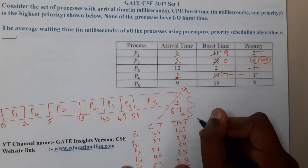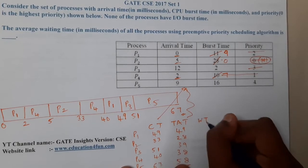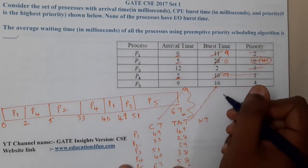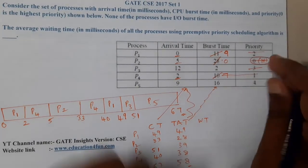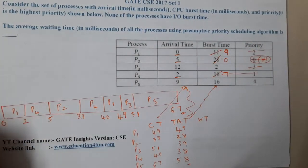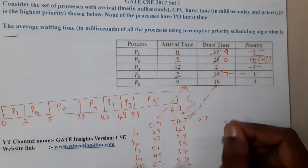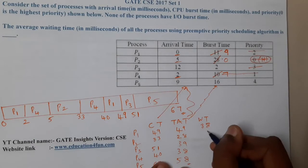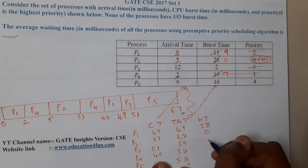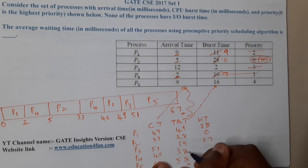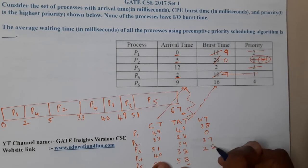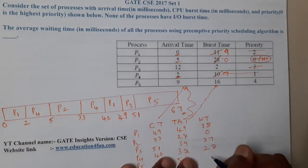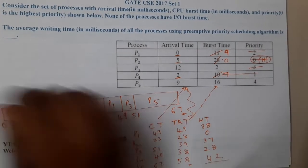Waiting time is turnaround time minus burst time. So: P1 = 49 − 11 = 38; P2 = 28 − 28 = 0; P3 = 39 − 2 = 37; P4 = 38 − 10 = 28; P5 = 58 − 16 = 42.